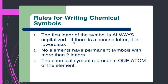There are many elements that use only one-letter symbols, for example sulfur, carbon, and hydrogen. But if an element uses a two-letter symbol, the second letter will always be a lowercase letter. No elements have permanent symbols with more than two letters. So the rule is: elements mostly use one or two letters for their permanent symbols. The chemical symbol represents one atom of the element.